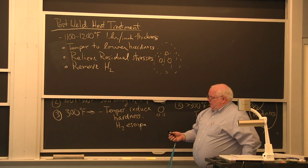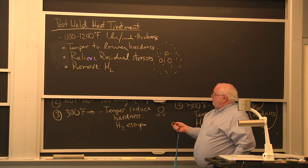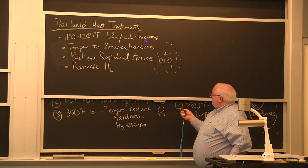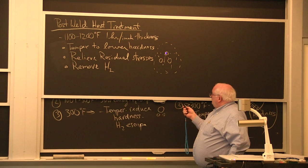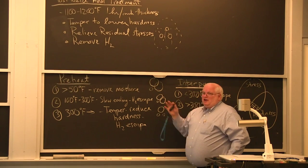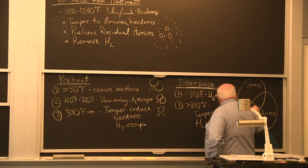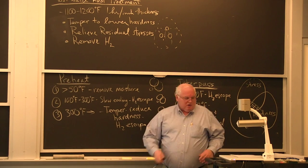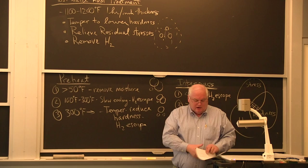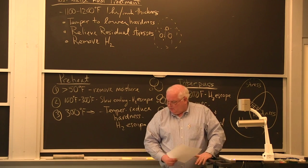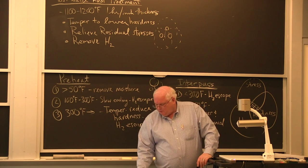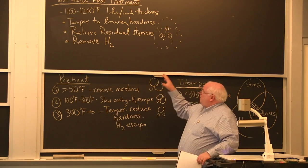You're also removing hydrogen big time because at 1100-1200 degrees the hydrogen is going to go out very rapidly. What you've done with a post-weld heat treatment is you've reduced all three circles. So you get no overlap zone. It's the overlap zone which is where you have the danger of cracking. Those are the reasons for pre-heat and post-weld heat treatment.